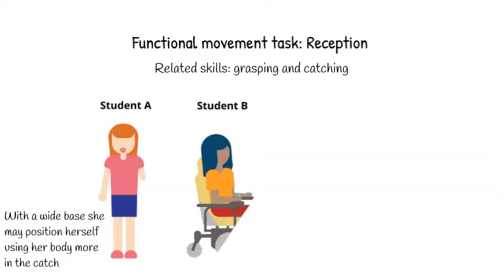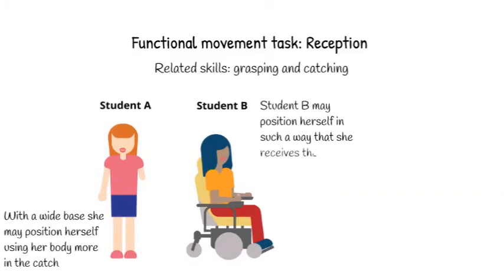Student B, who has a lot of difficulty using both arms and uses a power chair due to muscular dystrophy, may position herself in such a way that she receives the ball on her lap or into a basket on her lap.